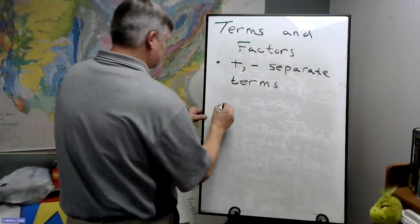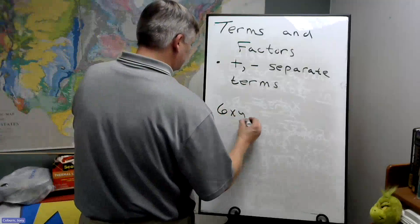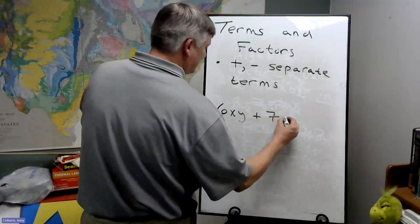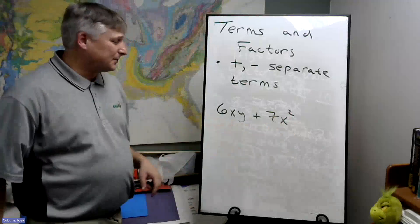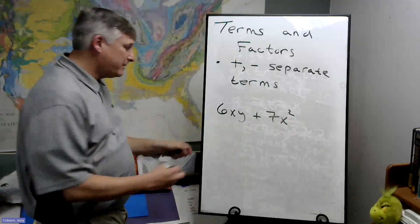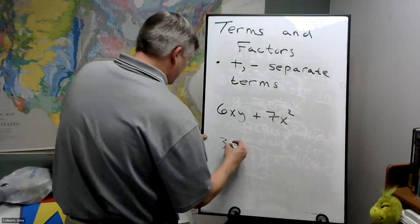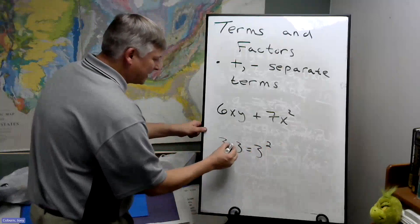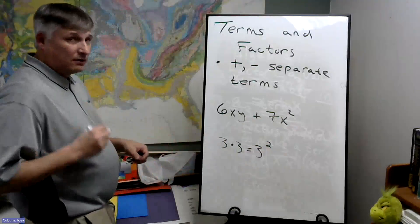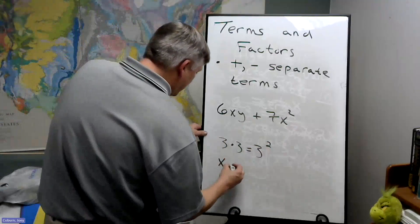So for example, here's our 6XY plus 7X squared, X squared being an X times an X. And in the same way we would write three times three as three squared - using a dot since we're in algebra now - we would do X the same way.